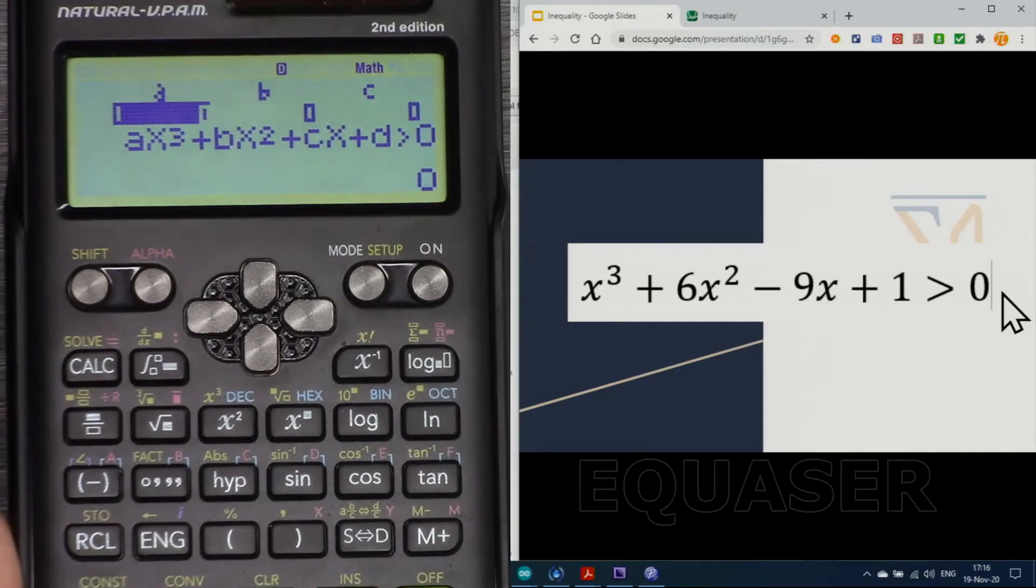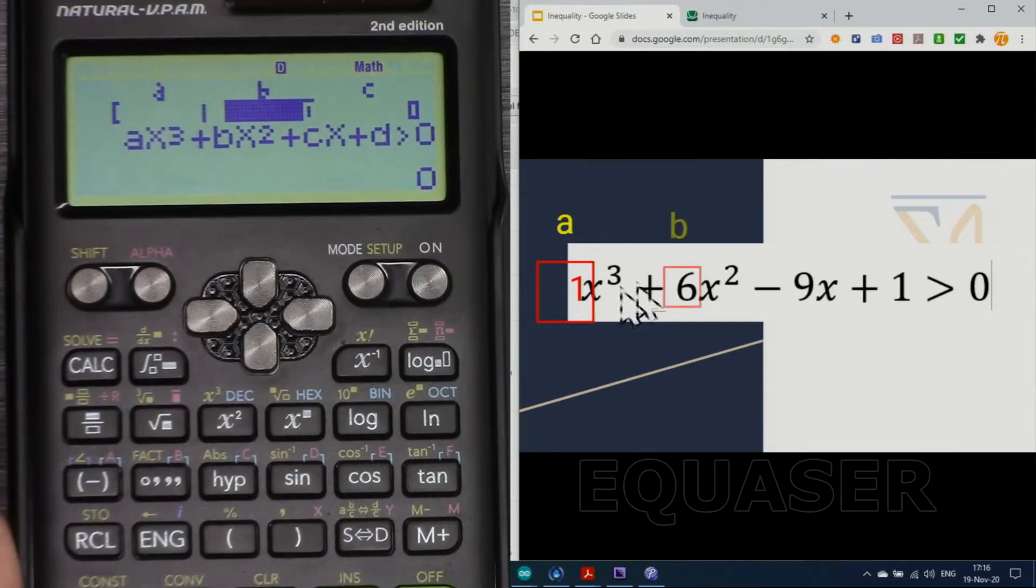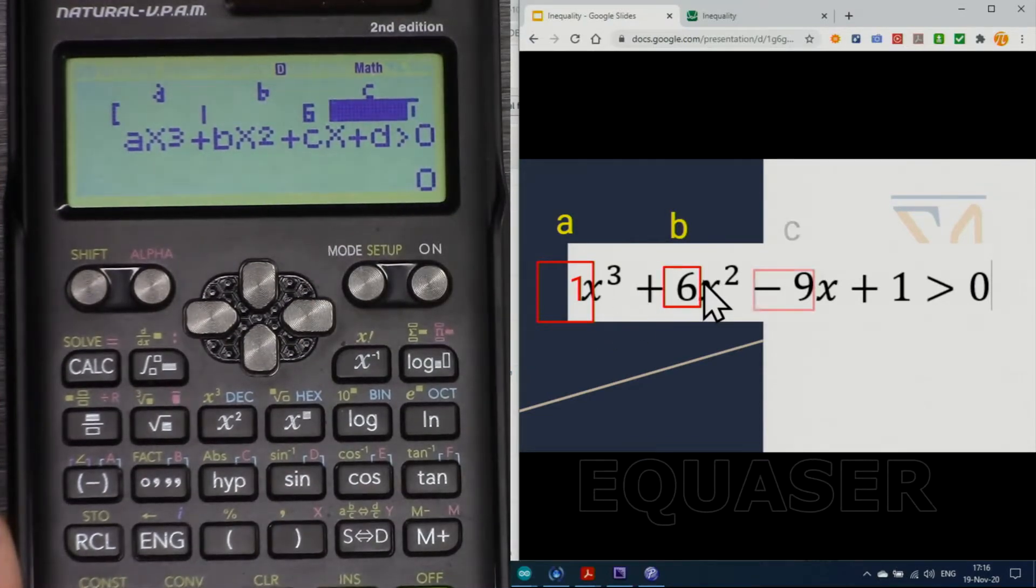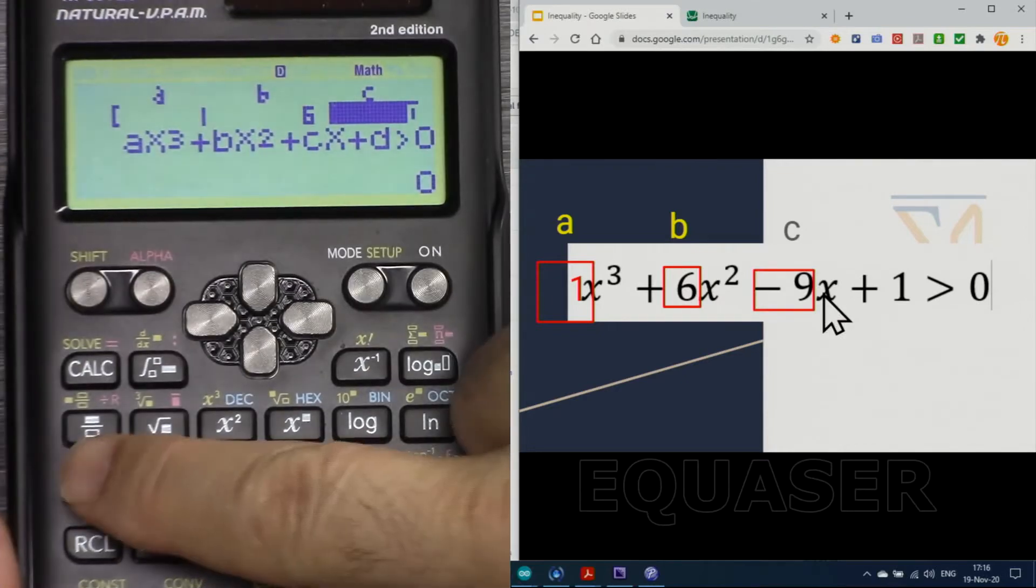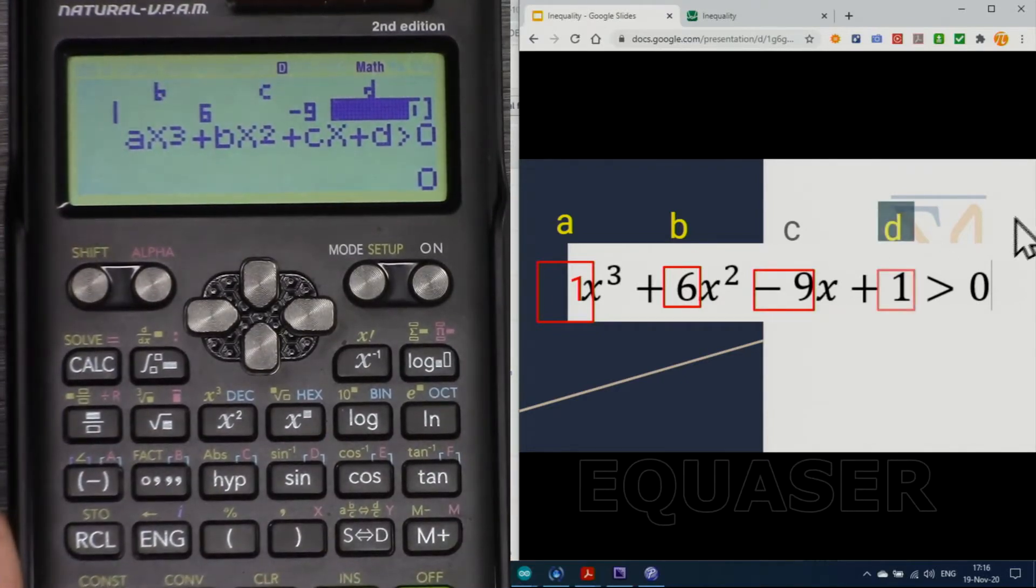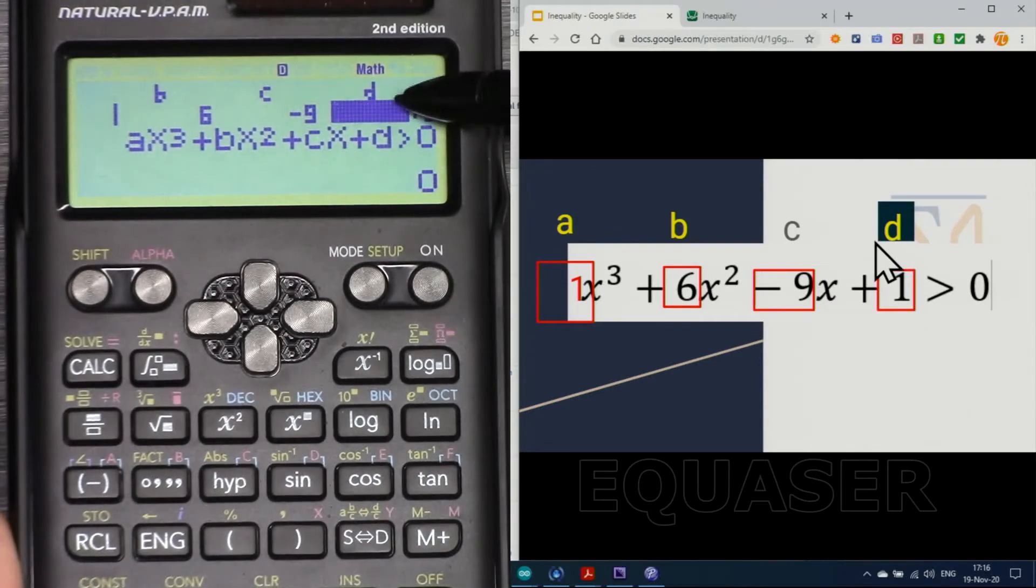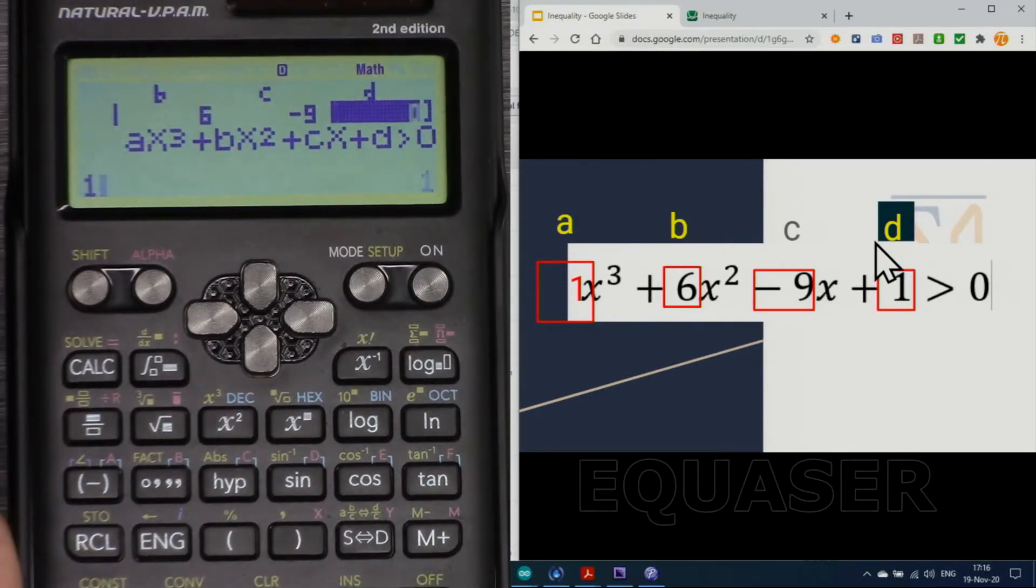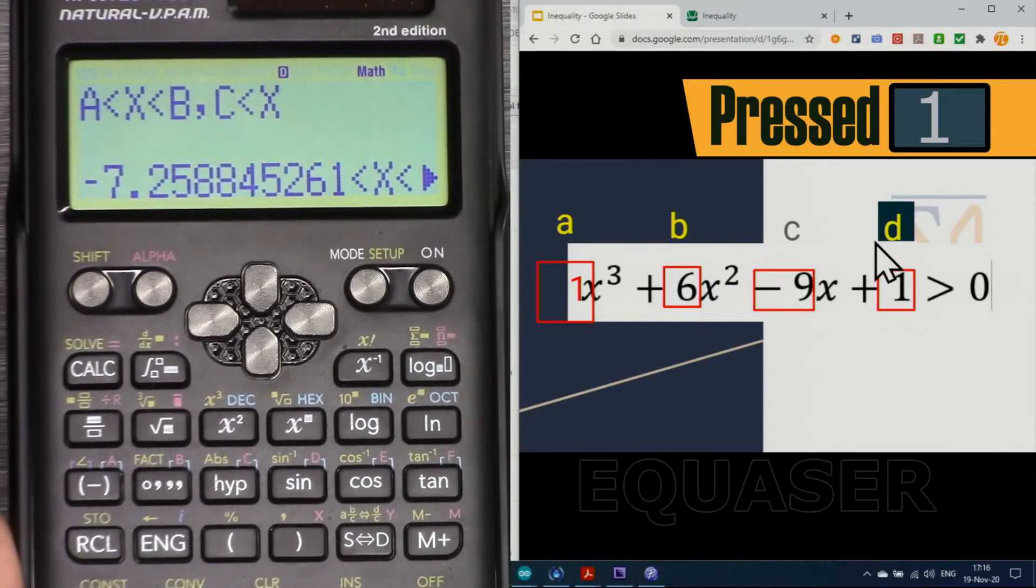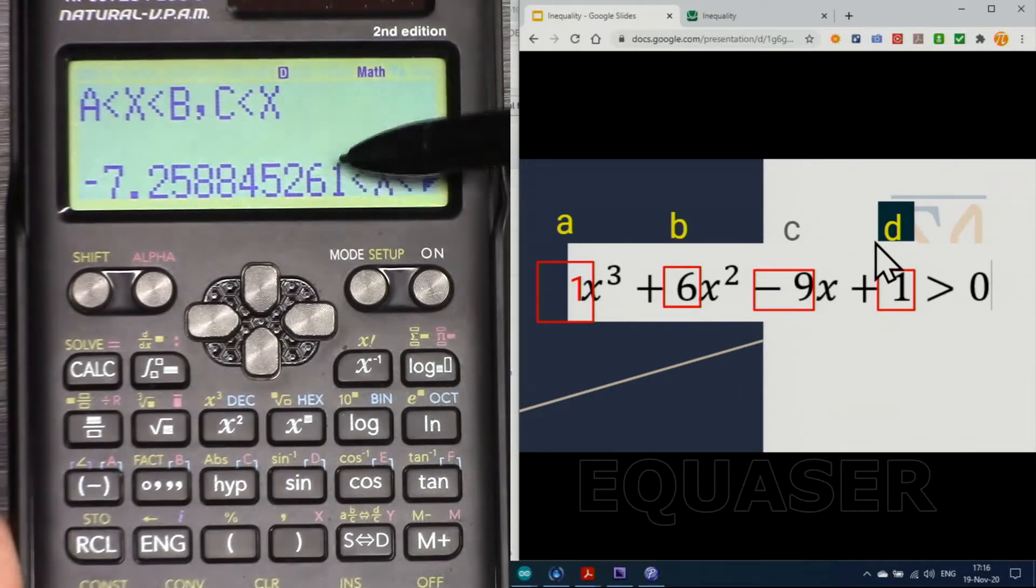And here we have to enter a, b, c, and then we have also d. A is 1, 1 and then equal. B is 6, 6 and then equal. -9, minus 9 equal. And then d is 1, as you can see d now appeared, a is on the other side, 1 and then equal. If I press equal sign it does the calculation and here is the result.